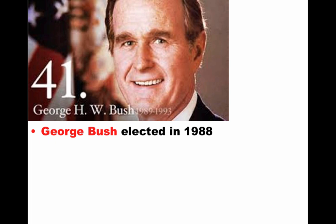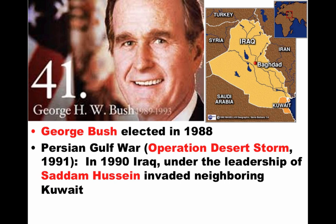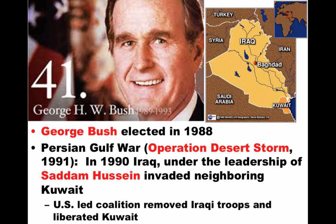A couple of things about George Bush you should know. He was elected in 1988, and one of the big events is the Persian Gulf War, or Operation Desert Storm. In 1990, Iraq under Saddam Hussein invaded neighboring Kuwait, a very oil-rich country. The United States entered on behalf of Kuwait, leading a coalition that ultimately removed Iraqi troops and liberated Kuwait, with the U.S. playing a huge role in the war.